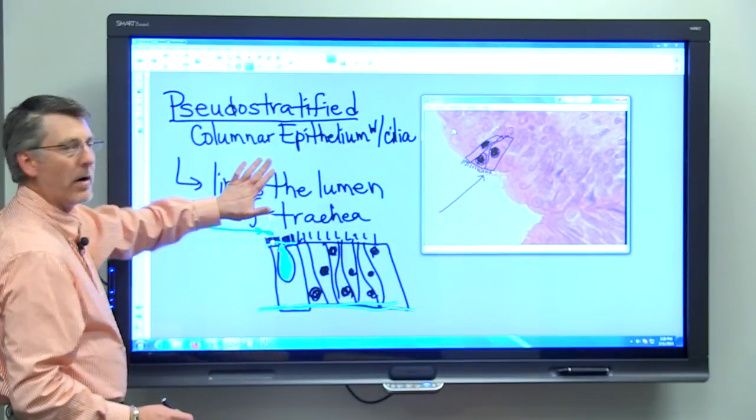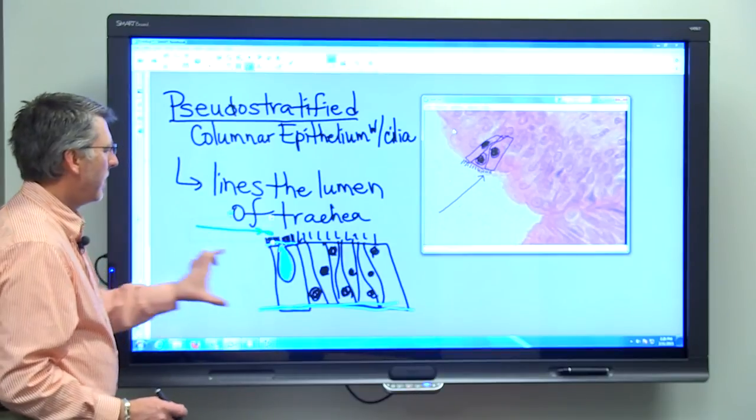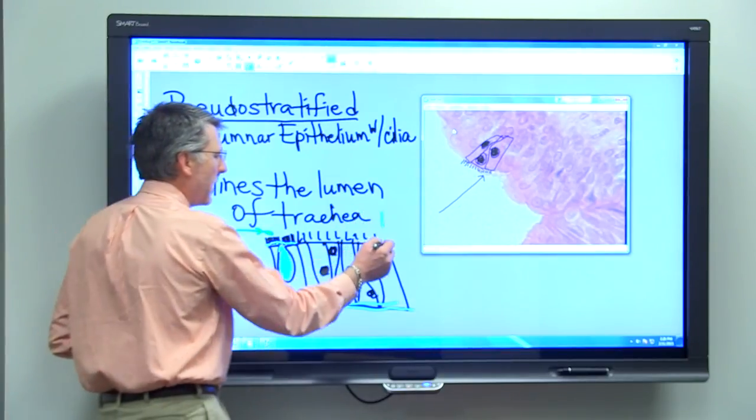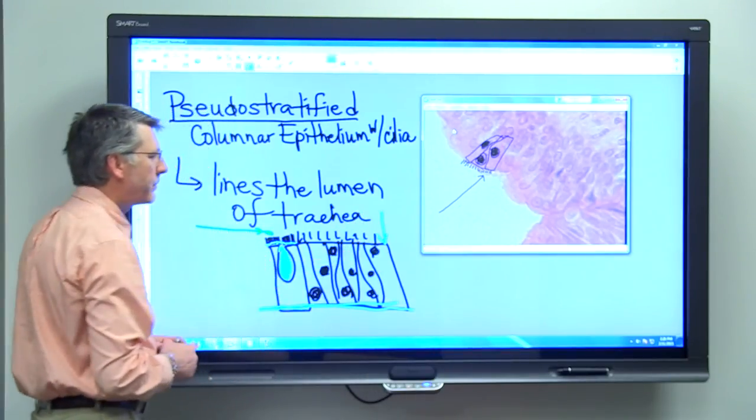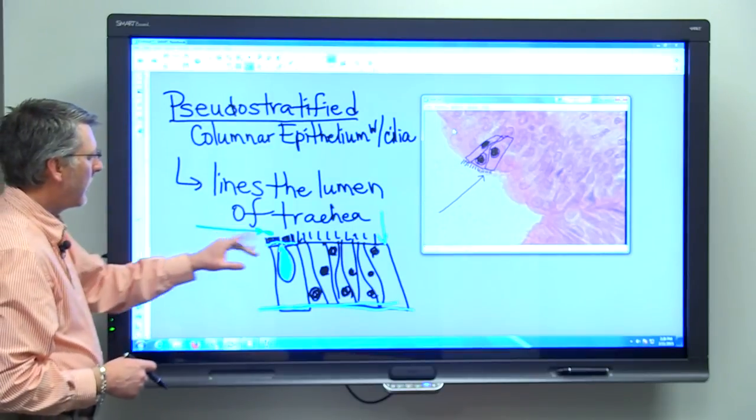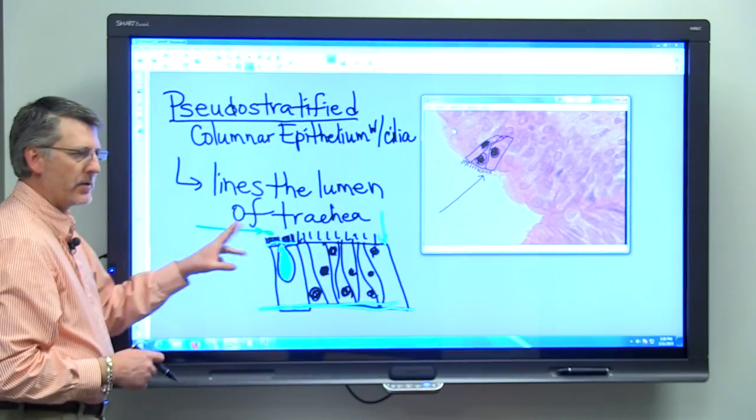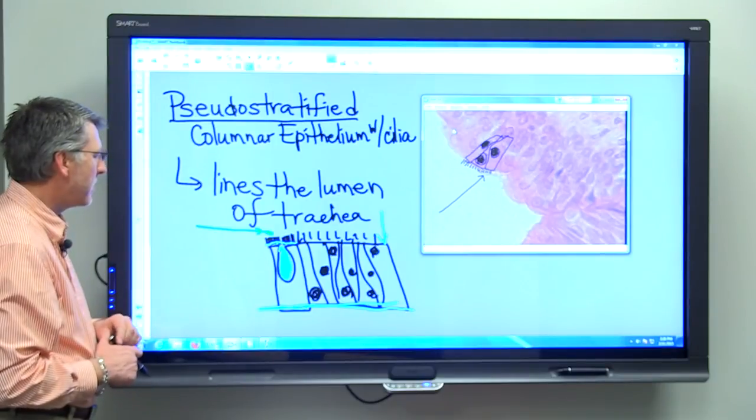Pseudo-stratified columnar epithelium with cilia. Thick cells help to protect the lining of the trachea. They have cilia, which help to distribute mucus that is secreted by this tissue.